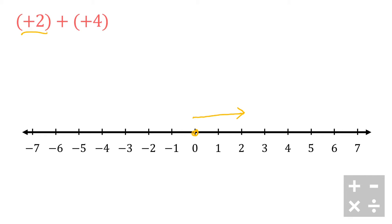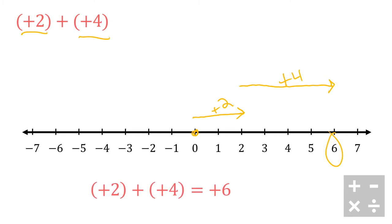Now I need to show the positive four in this addition sentence, so I'm going to go up a little bit from the last line and go four spaces — one, two, three, four. This shows me combining positive two plus positive four, and you'll notice I end up at positive six, which is exactly the result.